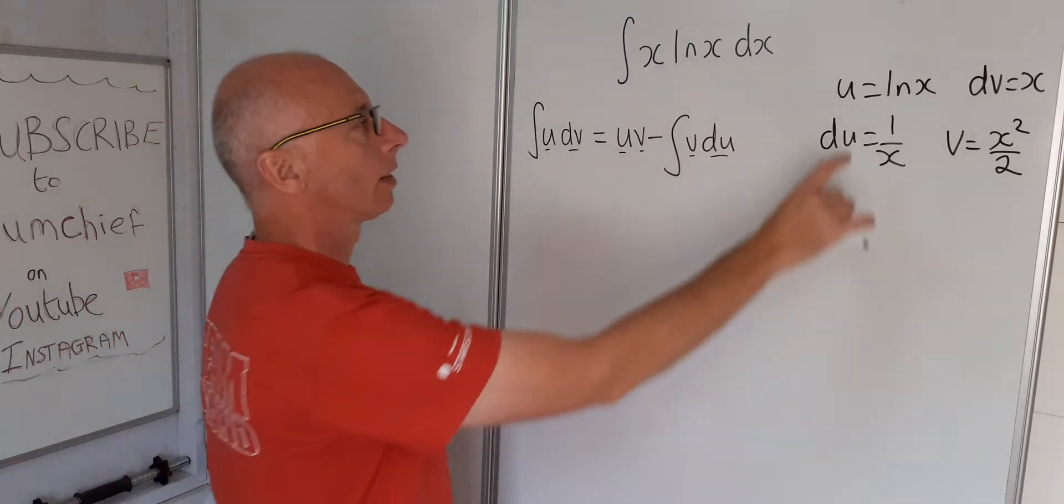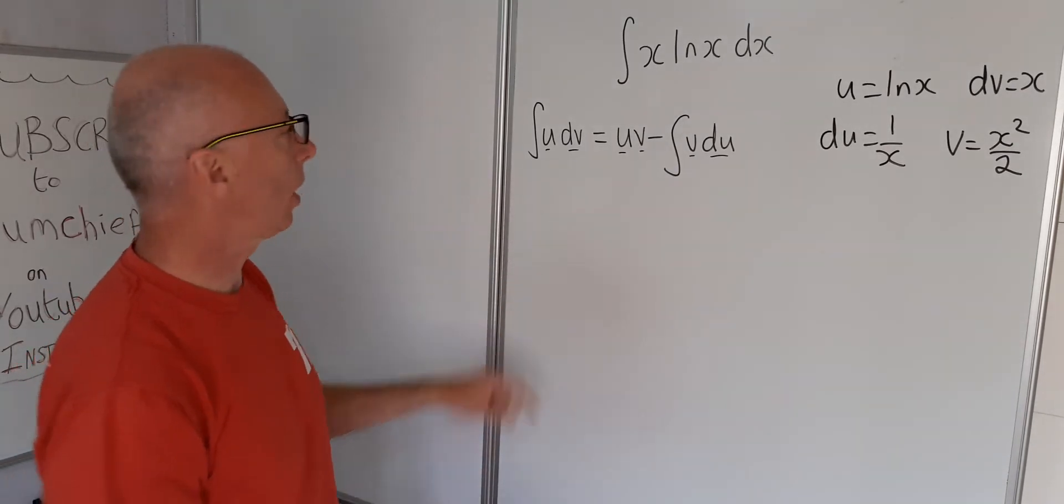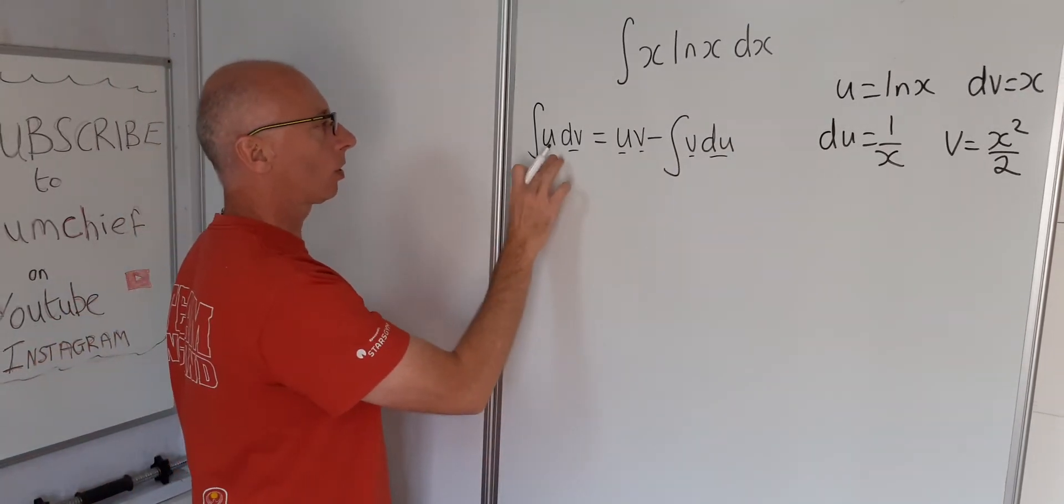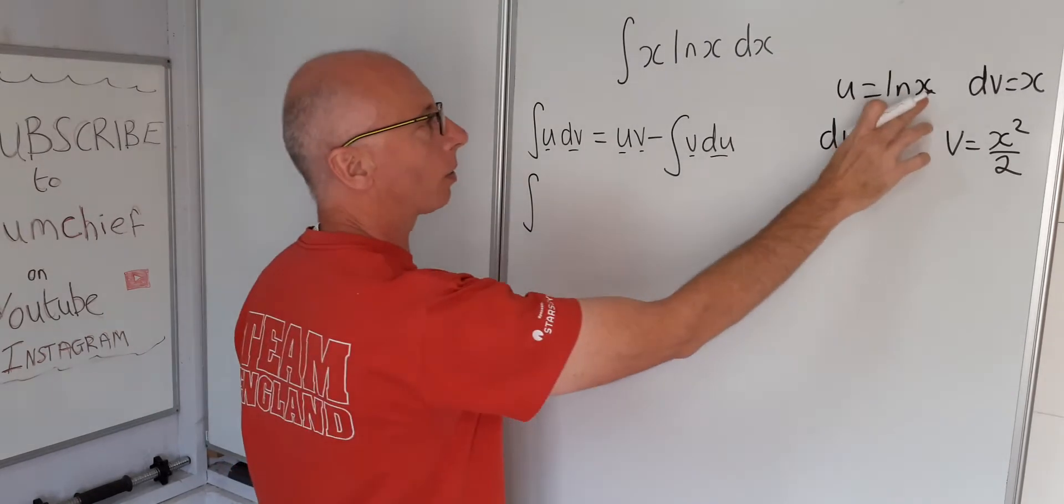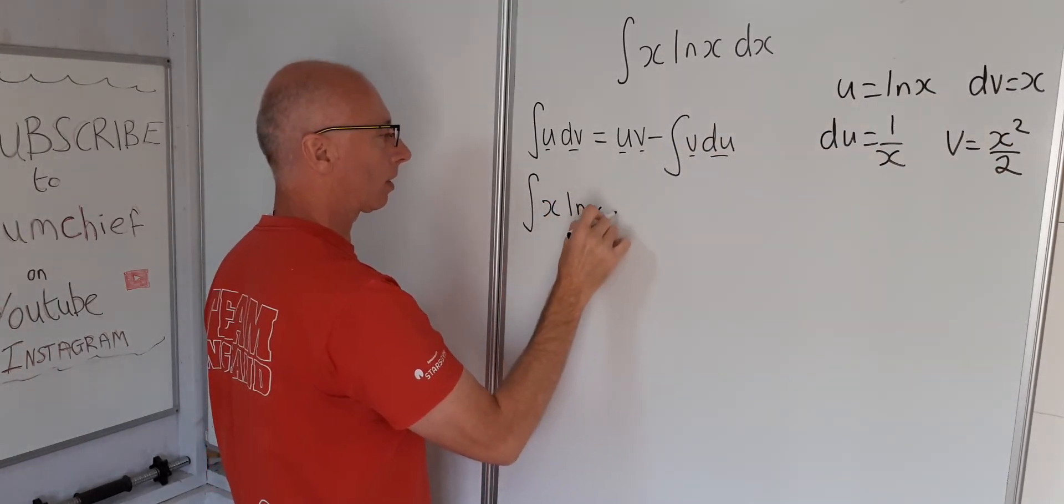Okay, so that's our four components. Let's plug into this formula. So let's write it out, see what we've got. u dv, so the integral of x natural log of x dx